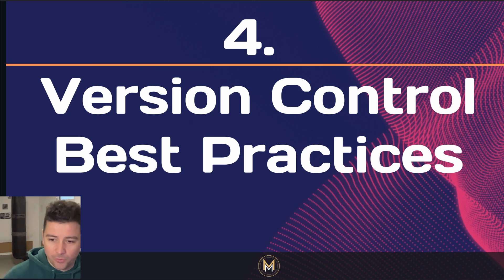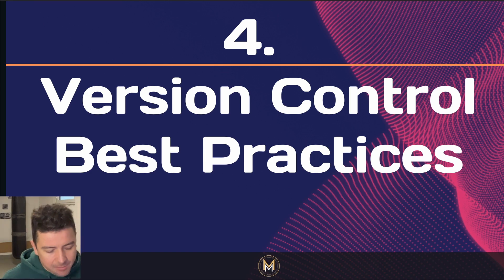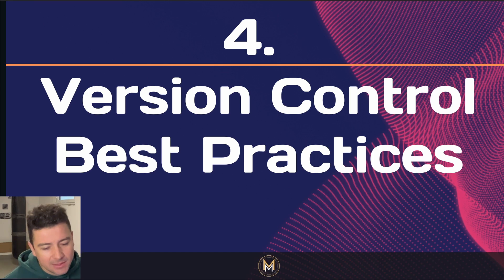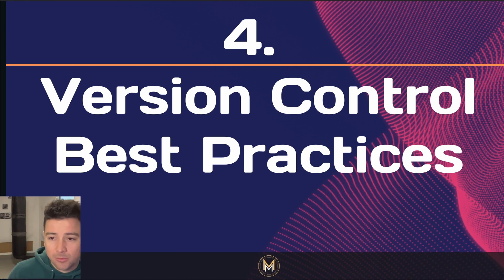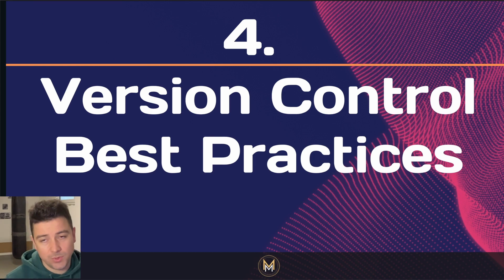Number four is version control best practices. Leverage the power of Git by adhering to version control best practices. Commit early and often with clear and descriptive commit messages — not just 'update something,' but specify what you updated, like 'updated the links in the navbar.' Use branches effectively to work on new features or bug fixes without disrupting the main codebase. Merge changes back into the main branch through pull requests after thorough review.